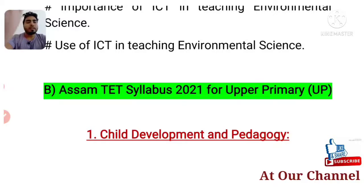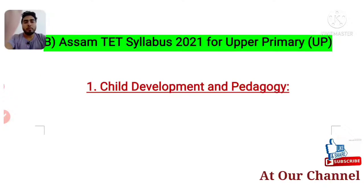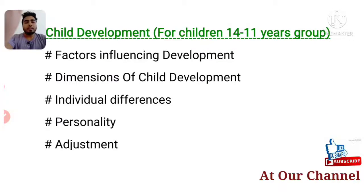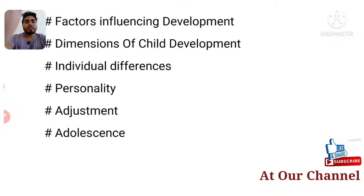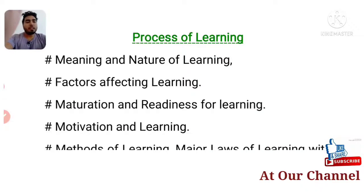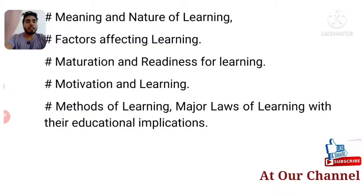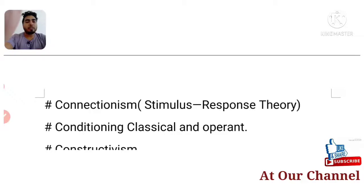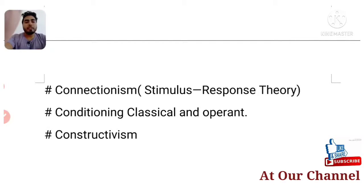Part 2 is the Assam TET Syllabus 2021 for Upper Primary, that is UP syllabus. Child Development and Pedagogy topics: factors influencing development, dimensions of development, individual differences, personality, adjustment, adolescence. Process of learning: meaning and nature, factors affecting learning, maturation and readiness, motivation, methods of learning, major laws of learning with their educational implications. Theories of learning: connectionism (stimulus-response theory), classical and operant conditioning, and constructivism.